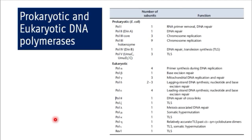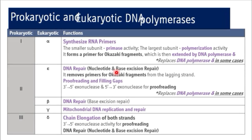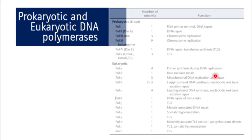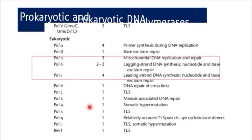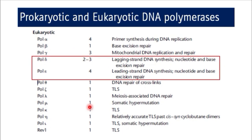Additional details on prokaryotic and eukaryotic DNA polymerases are provided in a reference table. Among the eukaryotic polymerases, one reference specifies that DNA polymerase delta has a DNA polymerase function specific for the lagging strand, while DNA polymerase epsilon is specific for the leading strand.